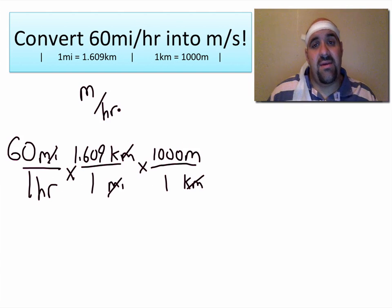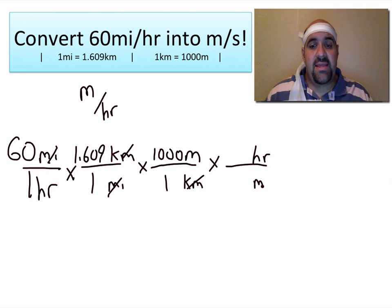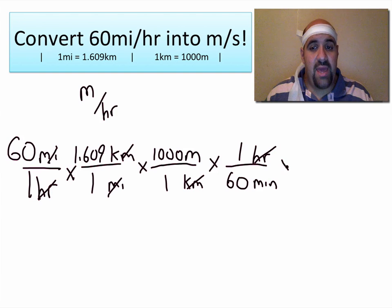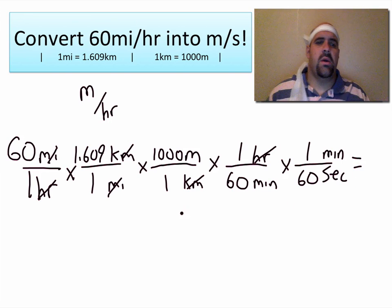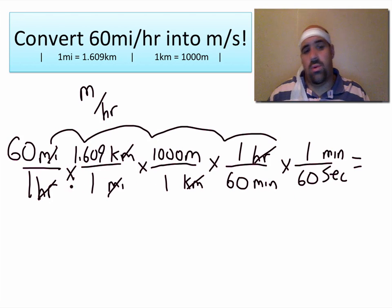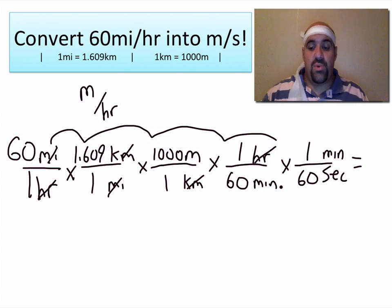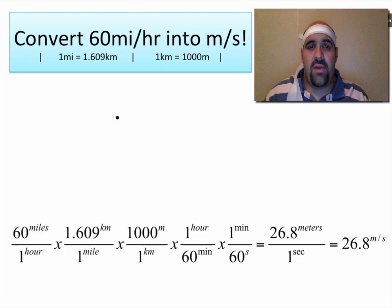Now I have to convert the hour into seconds. Another blank fraction — hour is in the denominator, so I put hour in the numerator so they cancel. I'm going to go into minutes: one hour is 60 minutes, so these hours cancel. One more time I need to go into seconds — minute is on the bottom so minute goes on top, seconds on the bottom. One minute is 60 seconds. Multiply all numbers across, then divide by 60 and divide by 60 again.